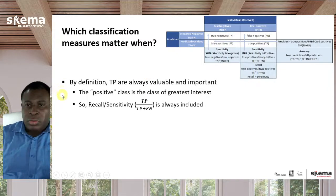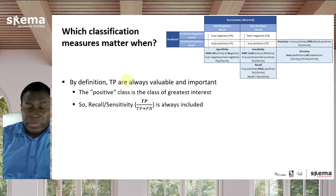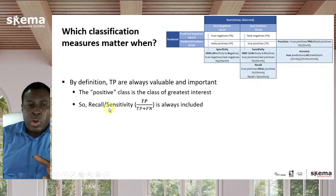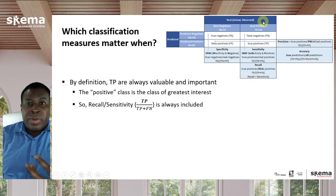With all of these measures, true positives are always valuable and important. The positive class is the class of greatest interest, so the model correctly predicting positives is very important to the modeling exercise. Therefore, in both pairs, you always include recall or sensitivity — they are actually exactly the same thing, just different ways of looking at it: the percentage of true positives divided by actual real-world positives.